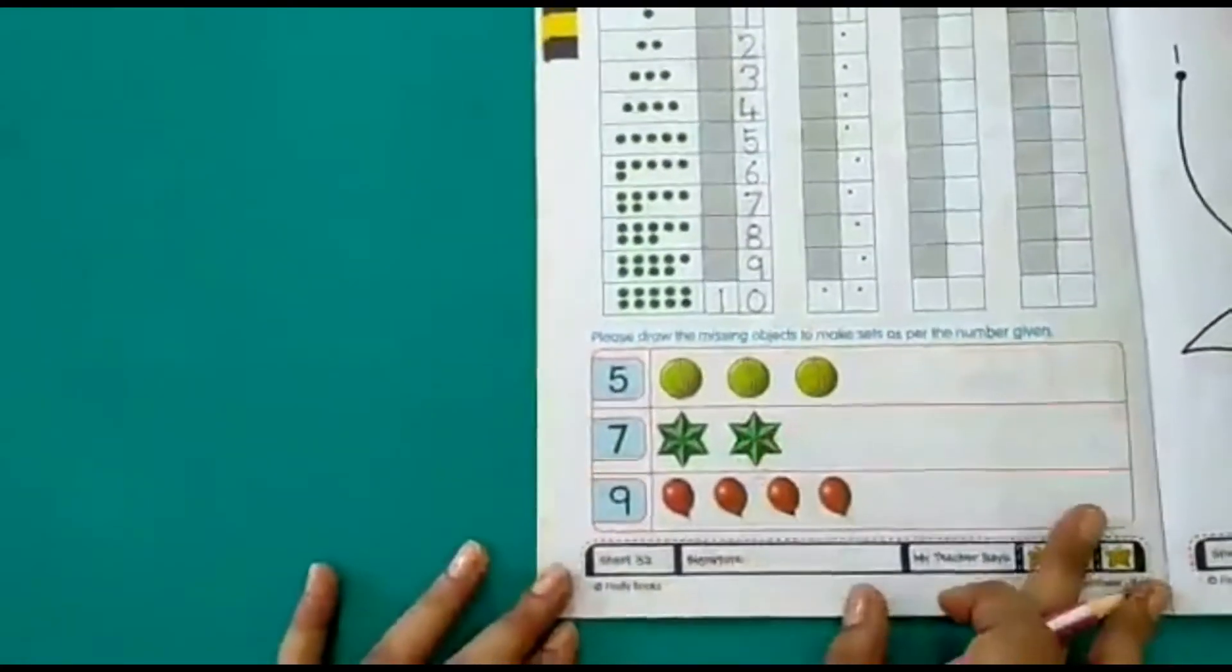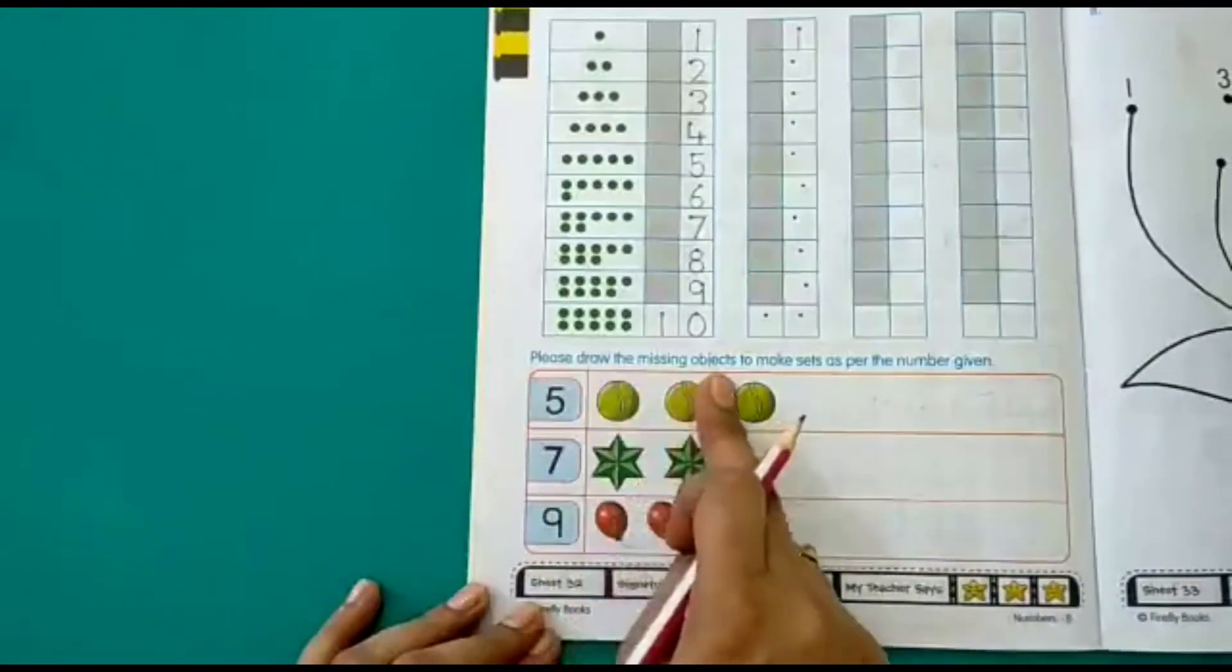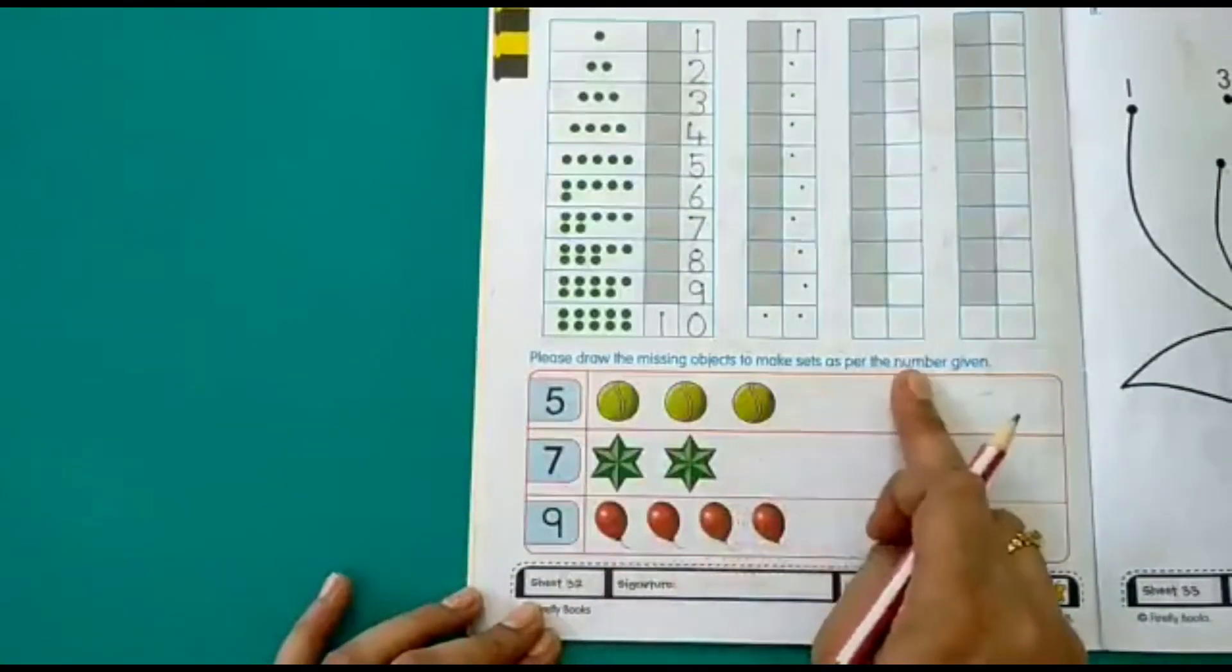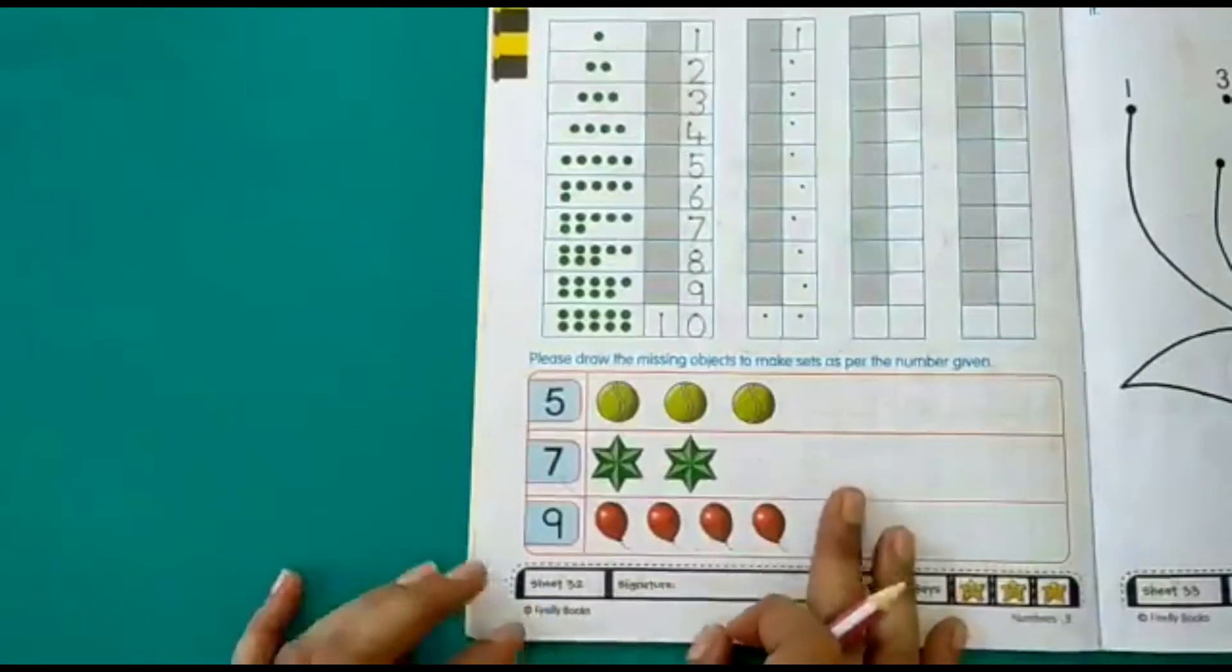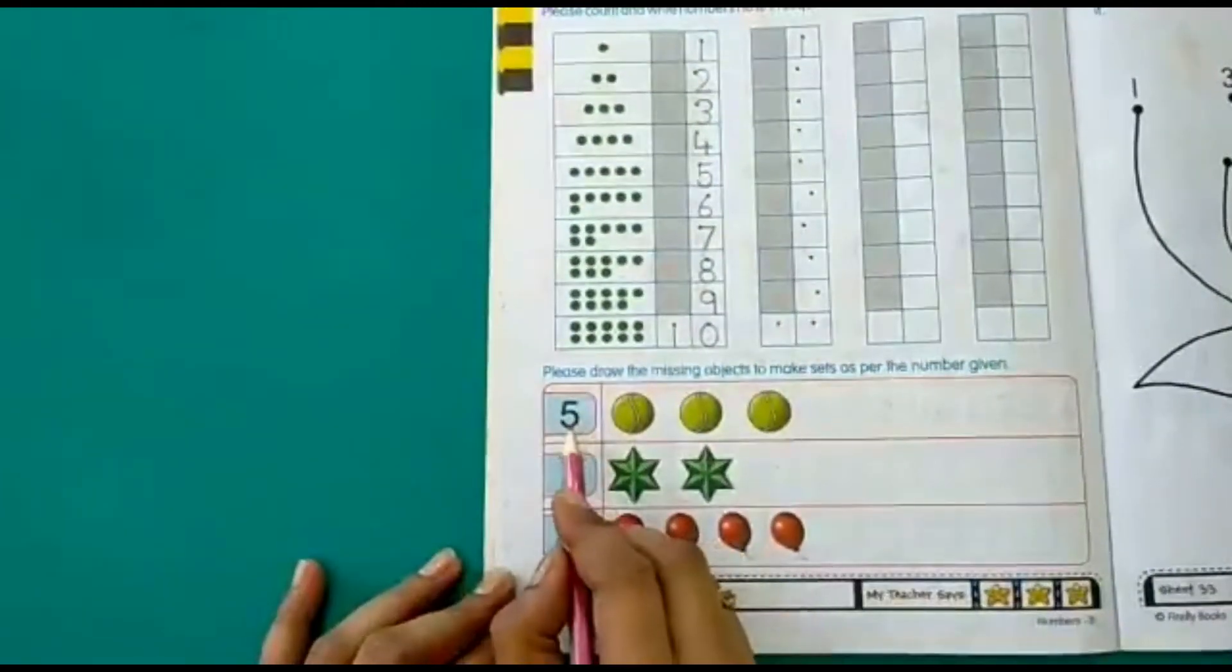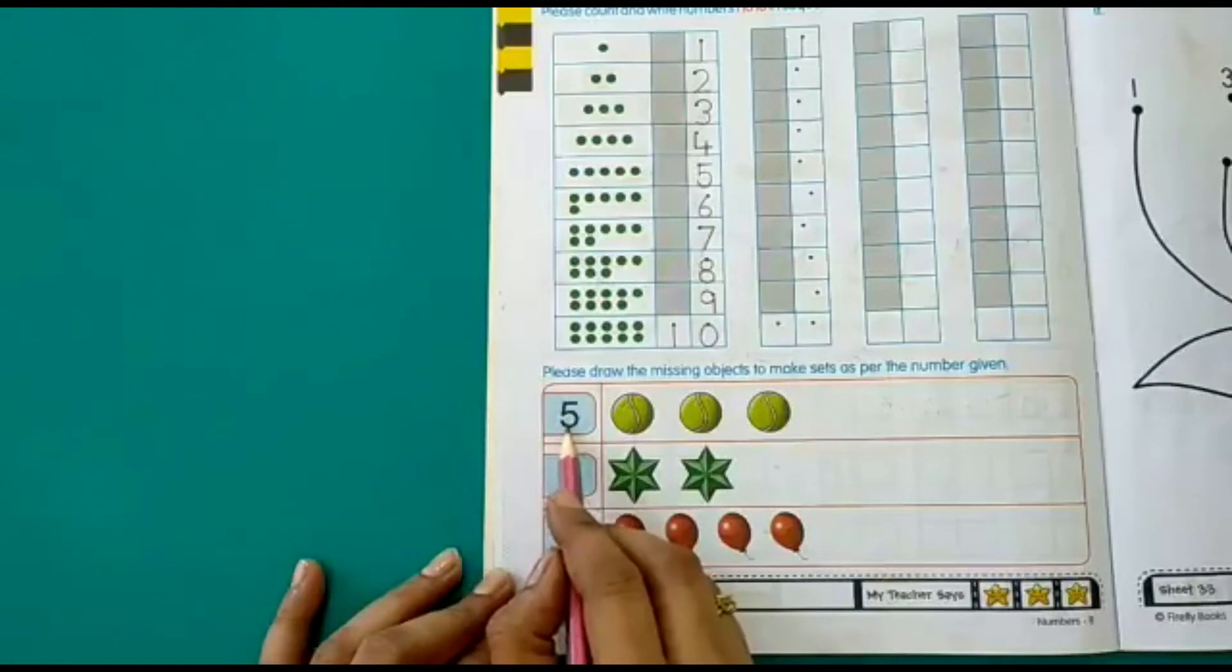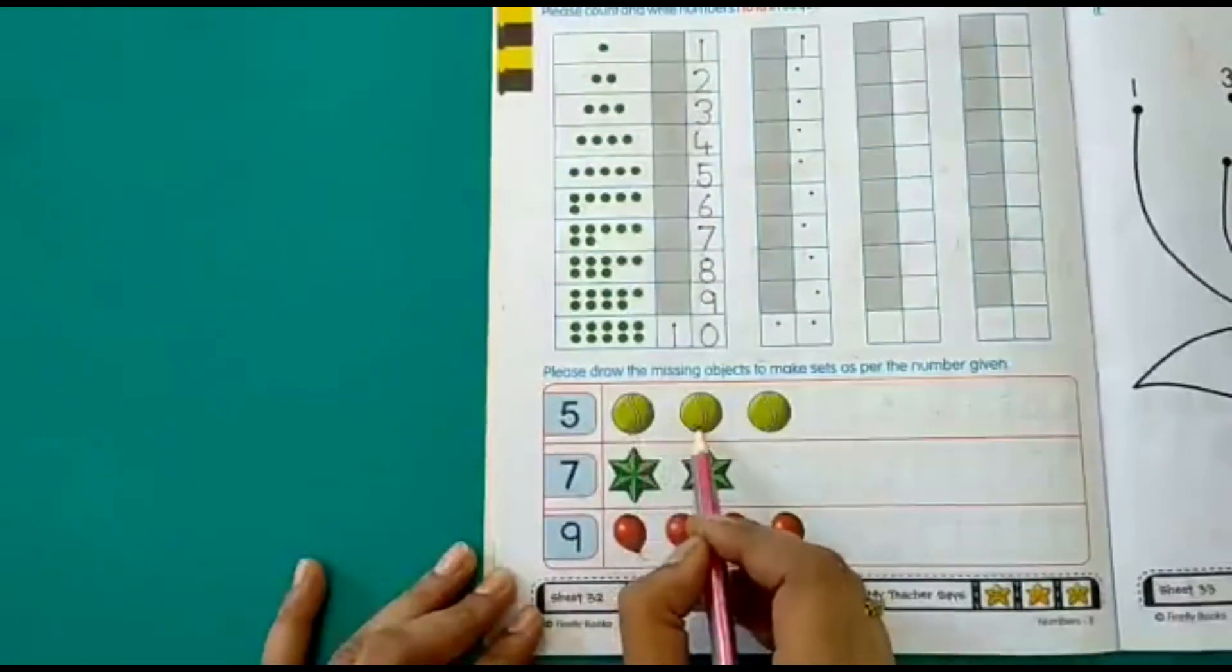Our next activity is we have to draw the missing objects to make sets as per the numbers given here. What does that mean? We have a number written here. This is number 5. And we have balls.